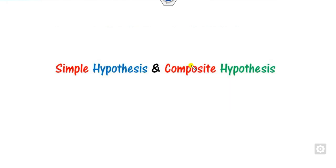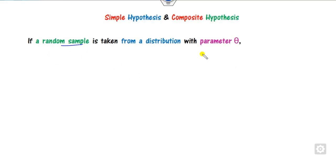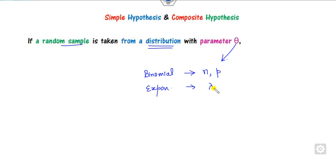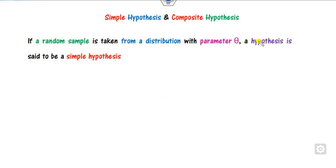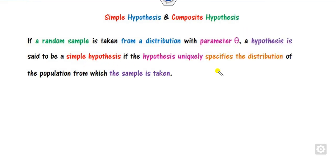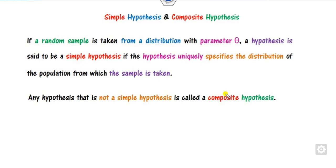Based on these hypotheses, you can define whether the hypothesis is simple or composite. Suppose you have a random sample taken from a distribution with parameter theta. For example, if you are talking about the binomial distribution, the unknown parameters are n and p. For the exponential distribution, the unknown parameter is lambda. For the normal distribution, theta is mu and sigma — the parameters of the population. If you uniquely determine the distribution of the population from the sample, the hypothesis is called simple; if you are unable to uniquely determine it, we call it composite.